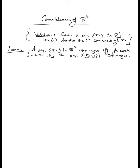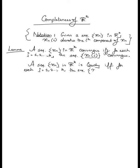We will then make a similar statement in the same lemma about Cauchiness. A sequence x_n in R^k is Cauchy if and only if every component sequence is Cauchy — that is, for each j from 1 through k, the sequence x_n[j], which is a real sequence, is also Cauchy. So a sequence in R^k is Cauchy if and only if every component sequence of reals is Cauchy. That is what this lemma conveys, and there are two statements.